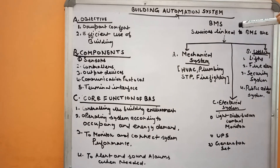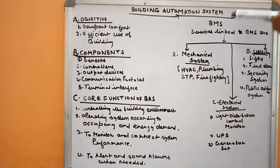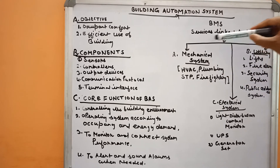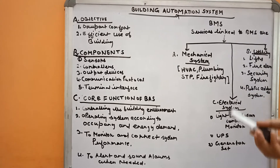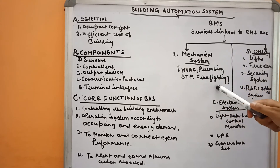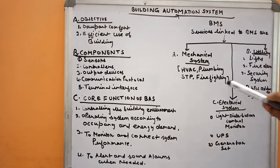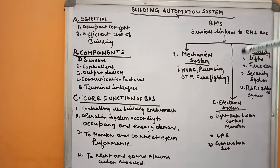Building automation systems have many subsystems. The Building Management System (BMS) is one, and is sometimes referred to as the automation system generally. BMS is defined by the services used in a building, which are linked to the BMS. These services are categorized into three main components: mechanical system, electrical system, and utility system. The mechanical system includes HVAC, plumbing, STP, and fire fighting. The electrical system covers light distribution, monitoring of lights, UPS, and generator sets. The utility system includes lifts, fire alarm, security system, and public address system. All these services are integrated to make the building management system work.